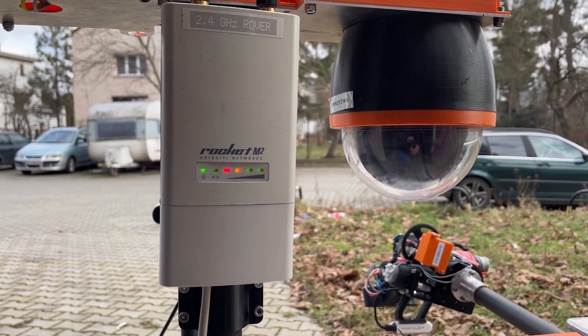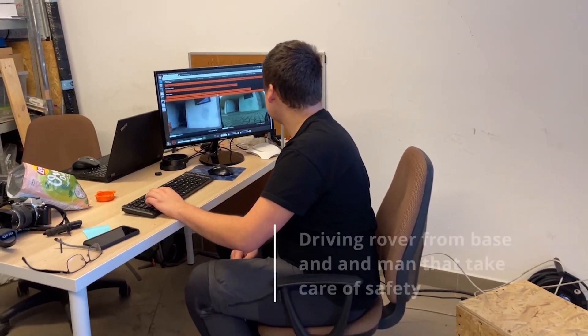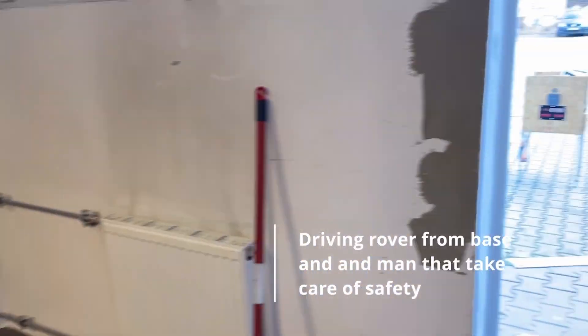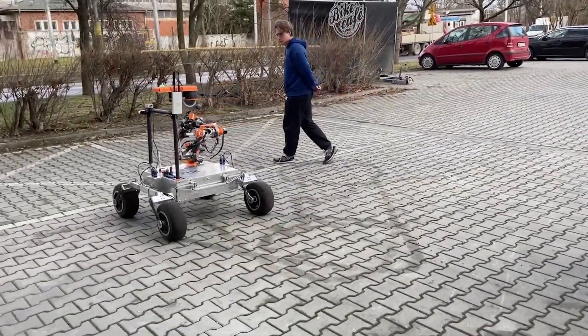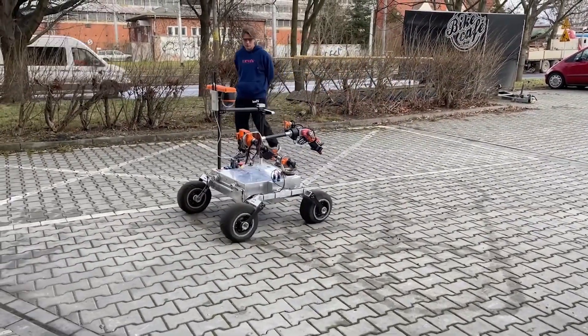The communication mast is modular and weighs 10 kg. Its height can range from 1 up to 3 meters. When extended over 2 meters, it is supported by a set of guy wires for stability.